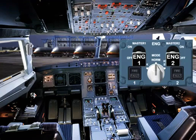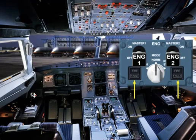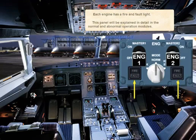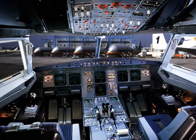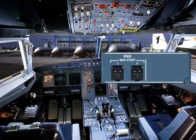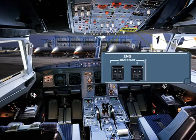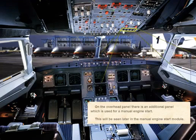Each engine has a fire and fault light. This panel will be explained in detail in the normal and abnormal operation modules. On the overhead panel, there is an additional panel which is used for a manual engine start. This will be seen later in the manual engine start module.